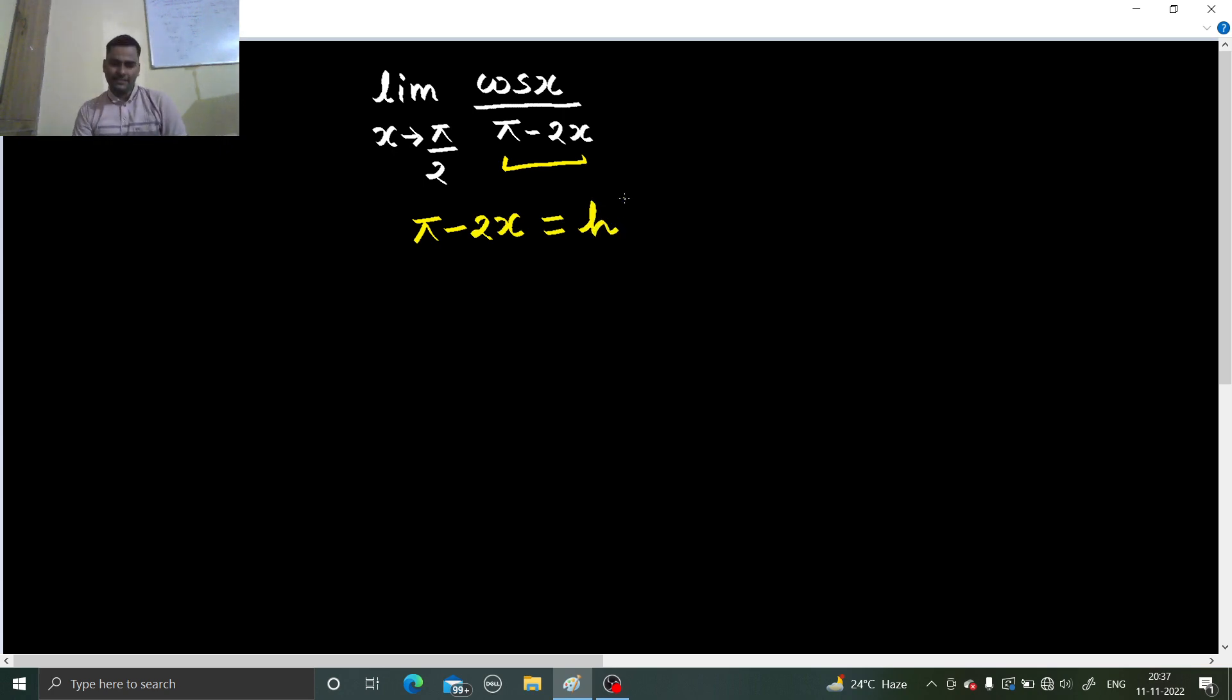We will have to write everything in terms of h. We will have to replace x wherever it is present by in terms of h. For that I want x in terms of h. So pi minus h equals to 2x or pi by 2 minus h by 2 equals to x. So I have got x in terms of h.